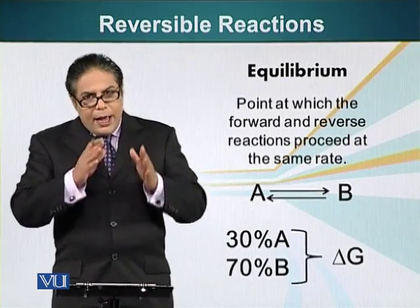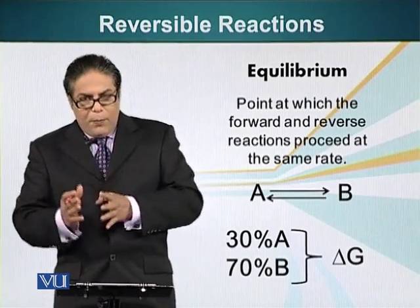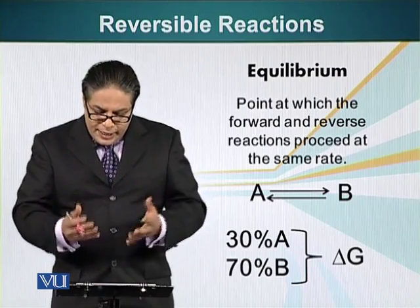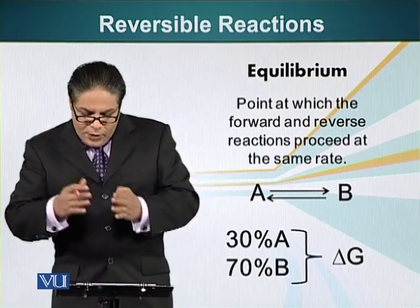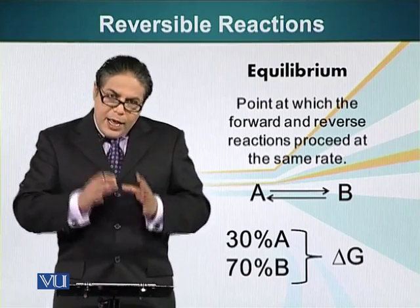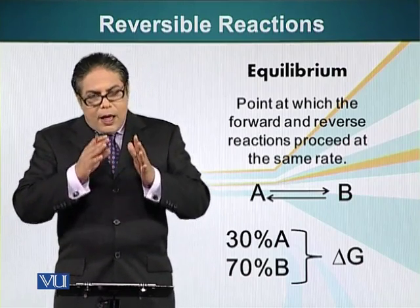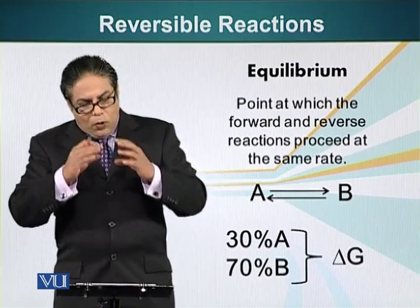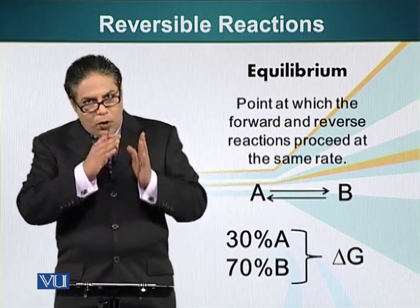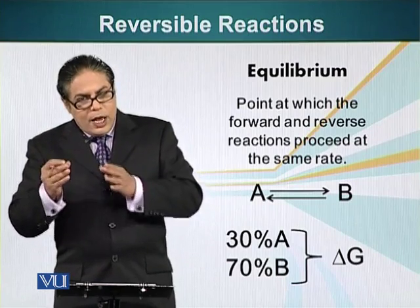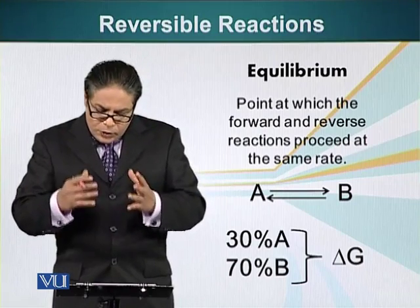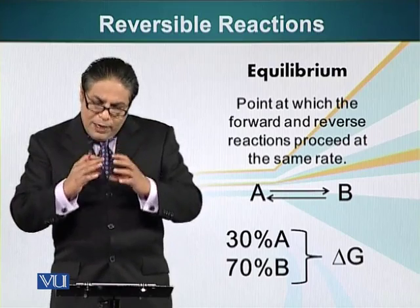Let's look at a hypothetical example. A is converting into B, and B can also convert to A. This process — A converting into B — is exergonic, releasing energy. How much A gets converted into B and how much B gets converted into A is a function of delta G, the free energy. At equilibrium, the concentration of A and B is constant — the number of A molecules converting into B equals the number of B molecules converting back into A.